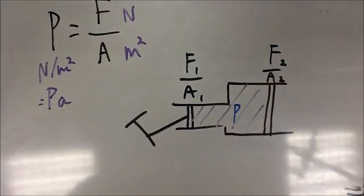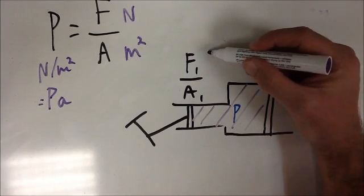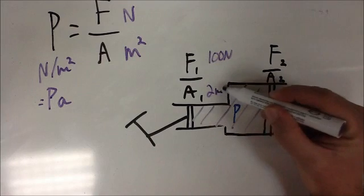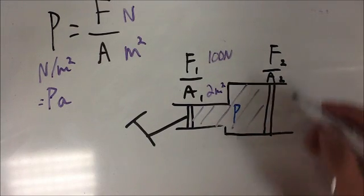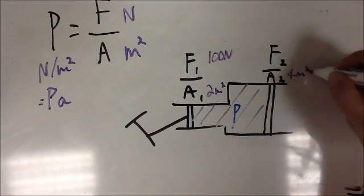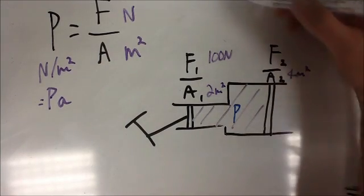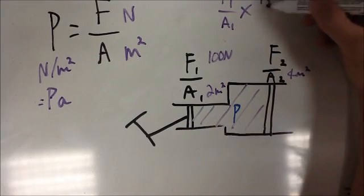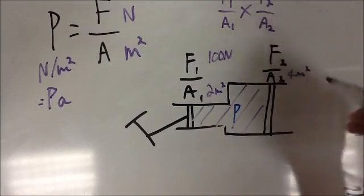So, to give you an example, if we push with 100 newtons here on an area of 2 metres squared, and here we have an area of 4 metres squared, we can do a little cross multiplication. So we have F1 over A1 equals F2 over A2.